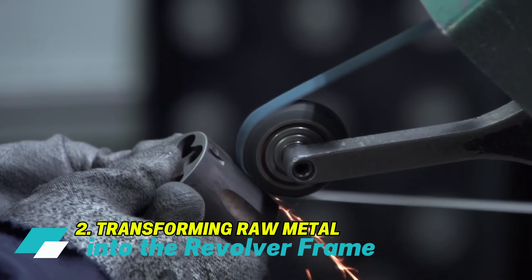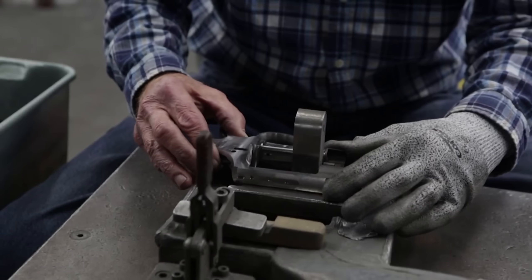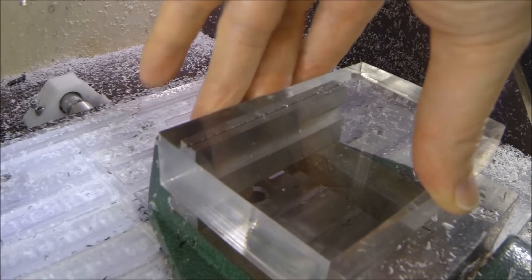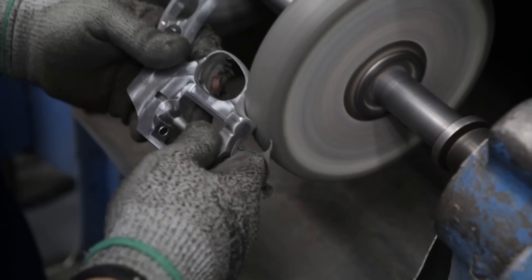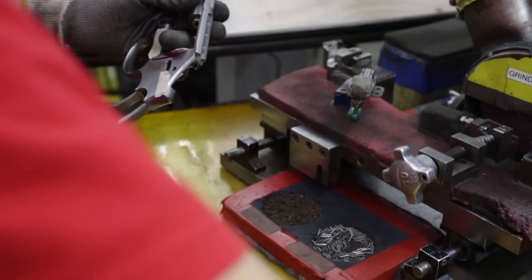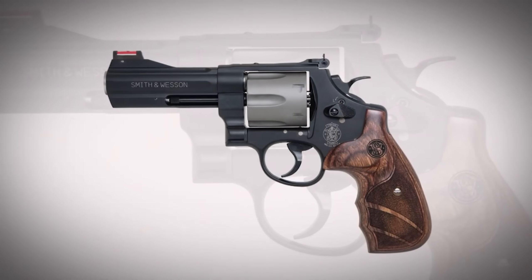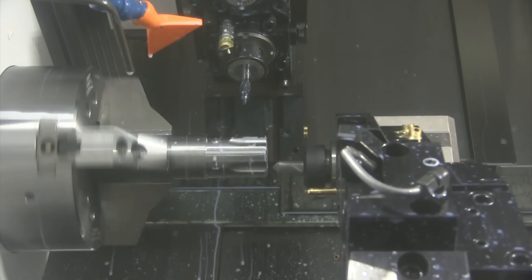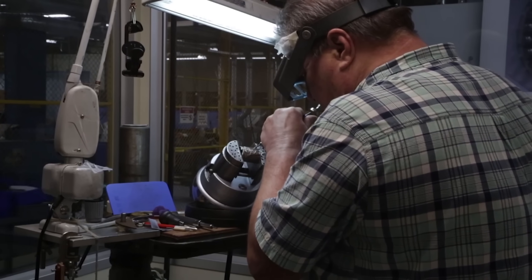Transforming raw metal into the revolver frame starts with high-grade steel blocks, chosen for their toughness and dimensional stability. These blocks are carefully inspected for any surface flaws or internal defects that could compromise the strength of the finished frame. Technicians examine each block looking for cracks, inclusions, or irregularities, making sure only the best material goes forward. This attention to detail is crucial, since the frame supports the revolver's main components and must withstand repeated firing stresses.